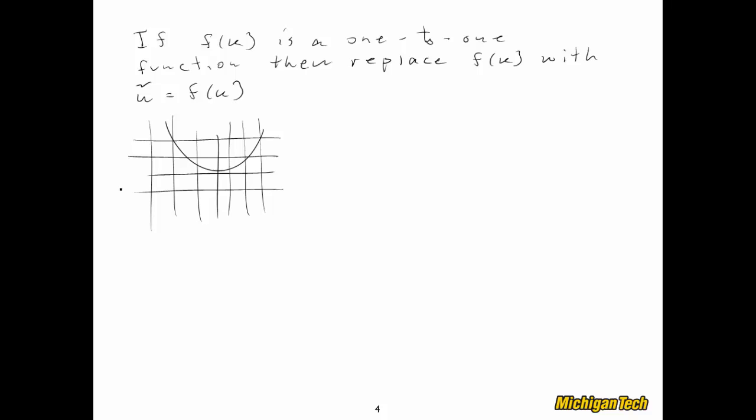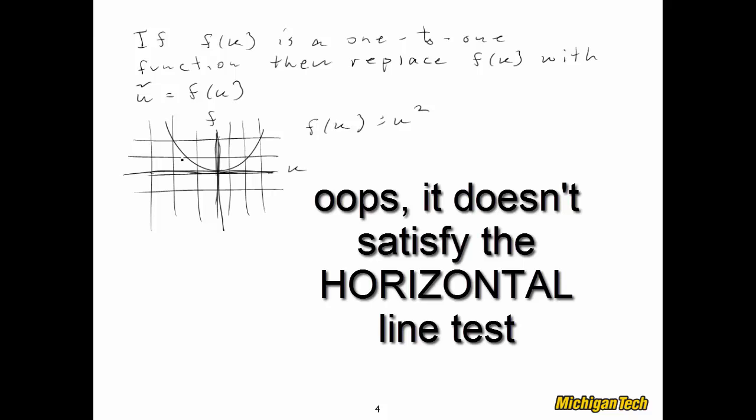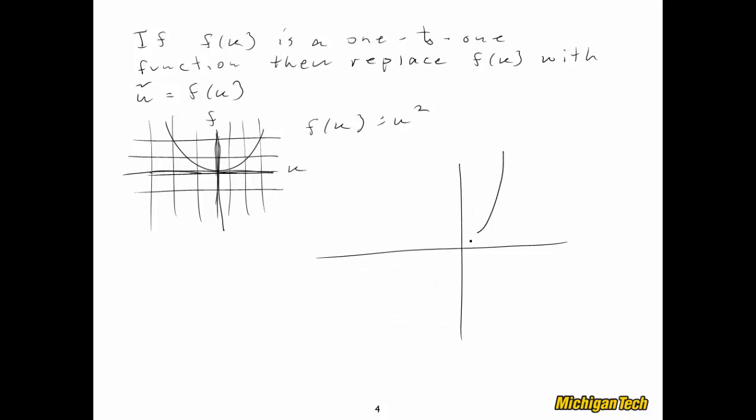Of course, this function, f(u) equals u squared, so this is u and this is f(u). I'll draw these in a little bit darker. There we go. There's my axis. It does not satisfy the horizontal line test, so we would say it's not one-to-one. However, if we had this function, let's say it was f(u) equals u cubed, so here's our u, there's our f(u), and that one indeed satisfies the vertical and horizontal line test. We would say it's one-to-one.